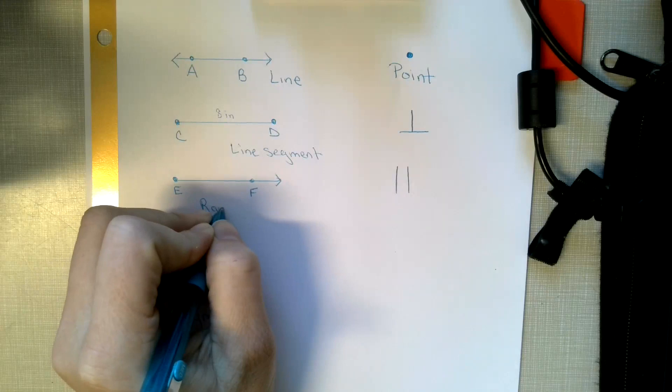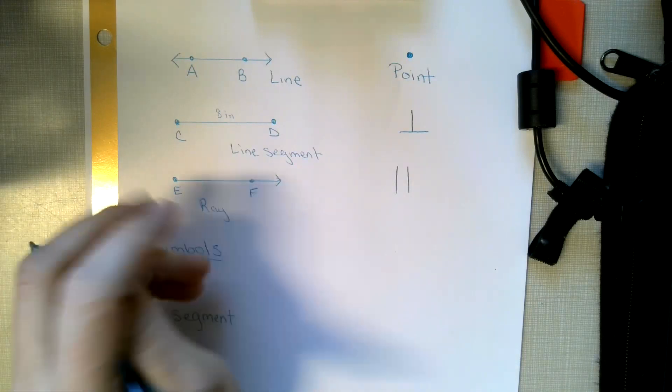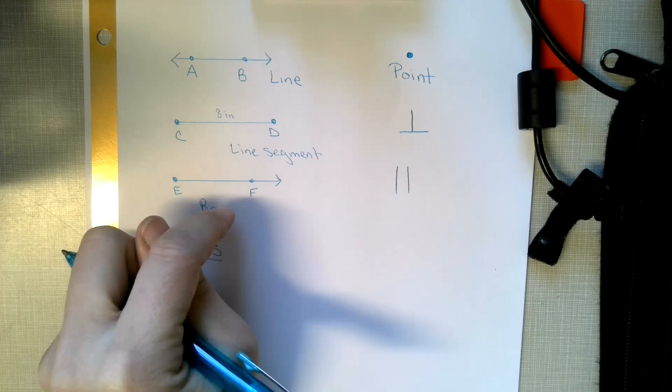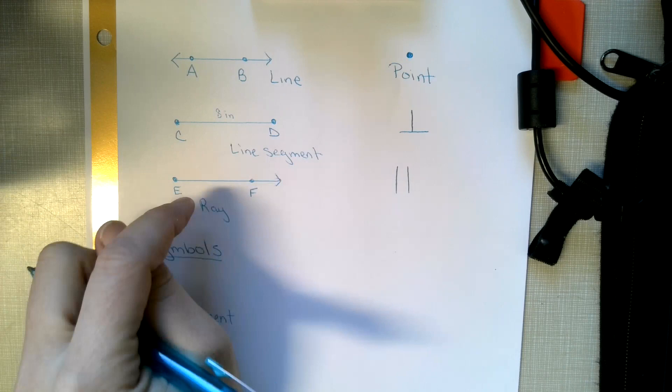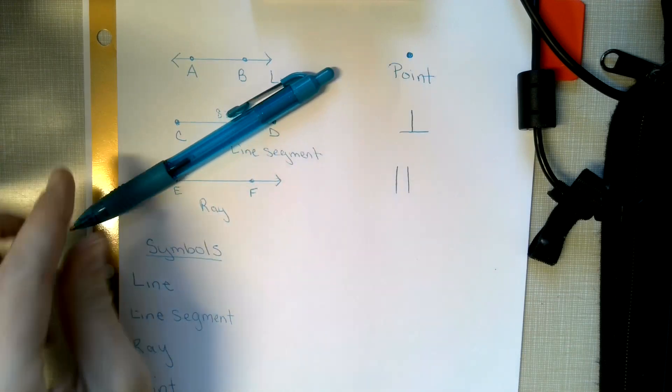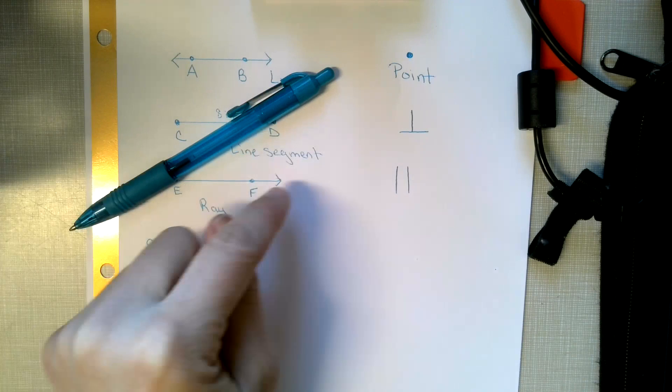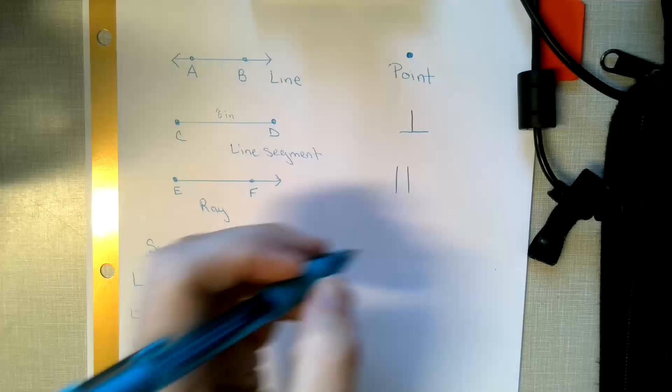This is called a ray. Now a ray has an endpoint and goes infinite in one direction. This also cannot have a distance. This ray is part of an angle. So if I put another one here and we follow my pen with this bottom ray, that would form an angle.